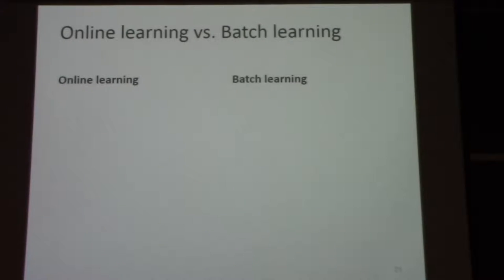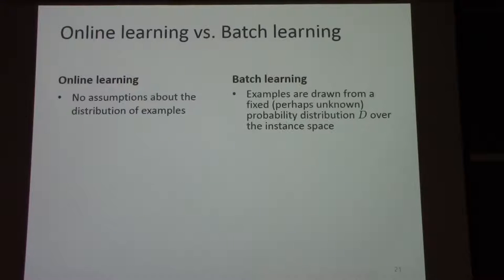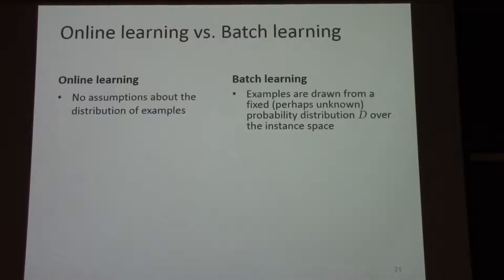We are now in the space of batch learning. To pick up where we left off: in online learning, we made no assumptions about the distribution of examples. In fact, all the results that we proved were in the setting that the examples are in the worst possible sequence as far as the learner is concerned. In batch learning, we make one assumption — we assume that examples are drawn from an unknown distribution. We don't care what it is, but it's fixed. The examples we get during training and the examples this classifier will be tested on are drawn from the same underlying distribution.